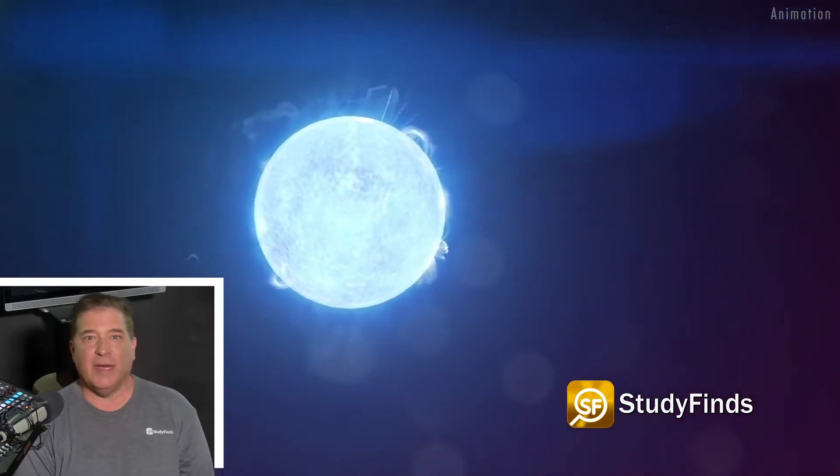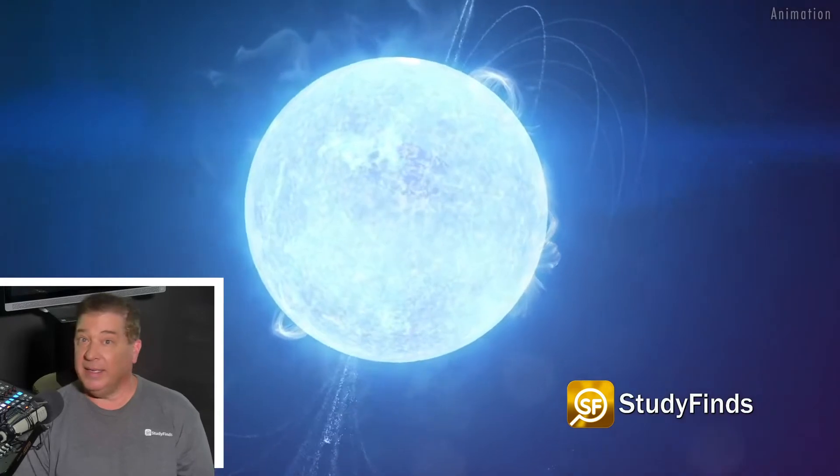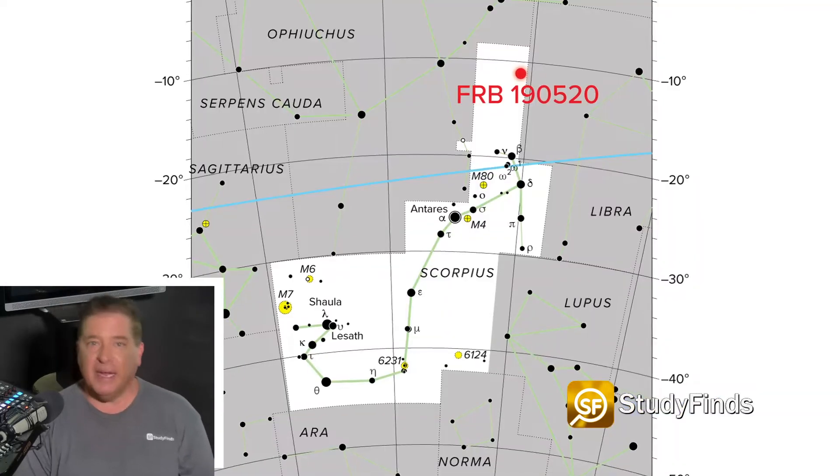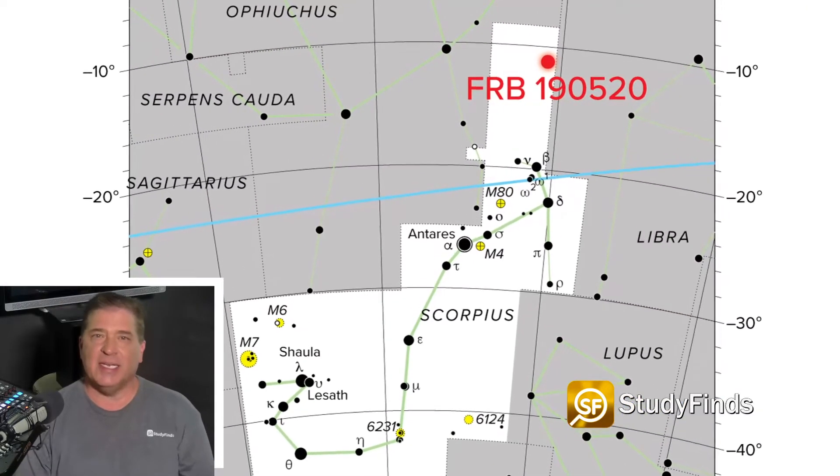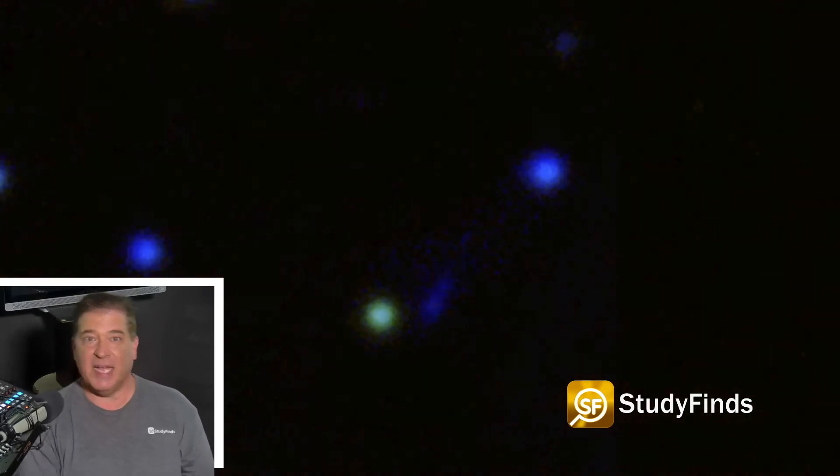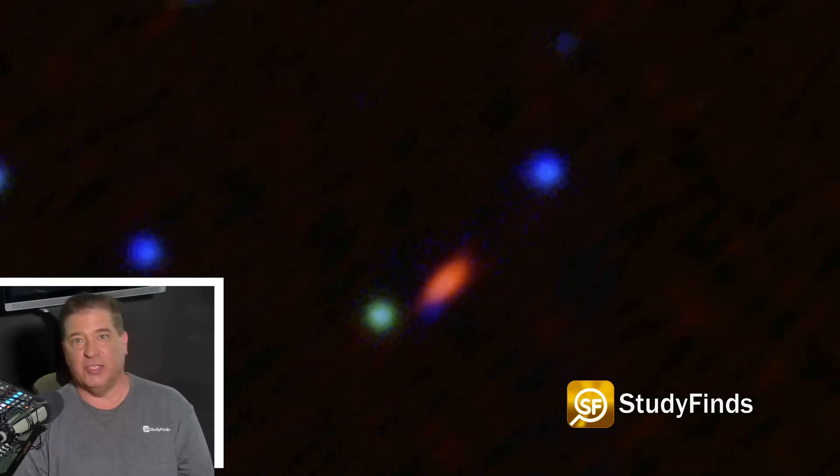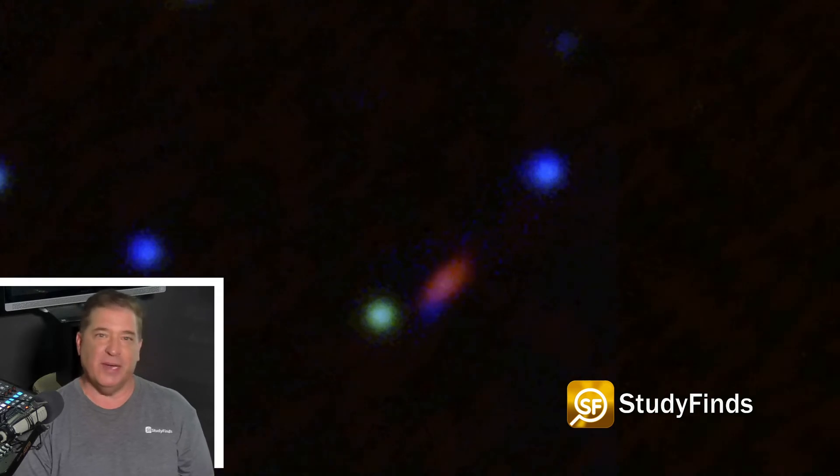This one is called FRB 1905-20. It's located in the constellation of Scorpio, seen here. A strange object sends out a beam of radiation that crosses our line of sight that you can see here in this National Radio Astronomy Observatory image.